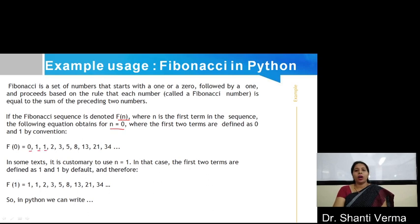So, the series is 0, 1, 0 plus 1 is 1, 1 plus 1 is 2, then 1 plus 2 is 3, 3 plus 2 is 5 and so on.